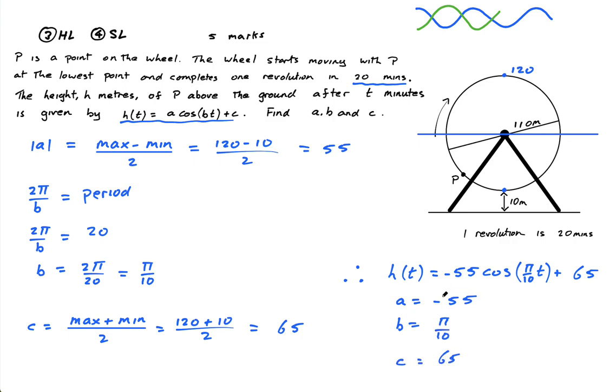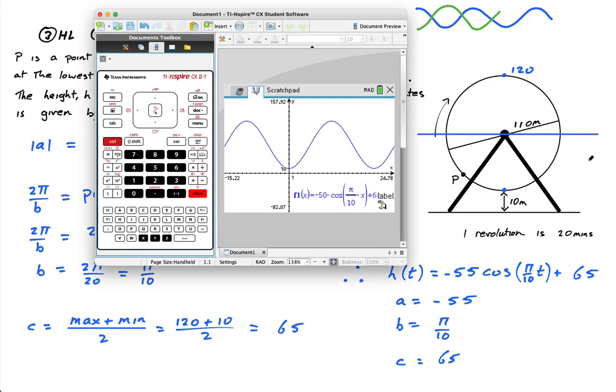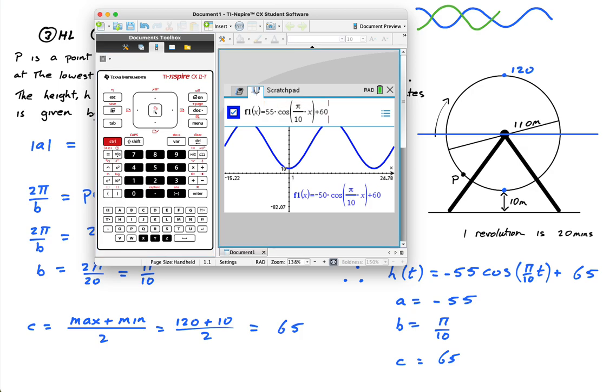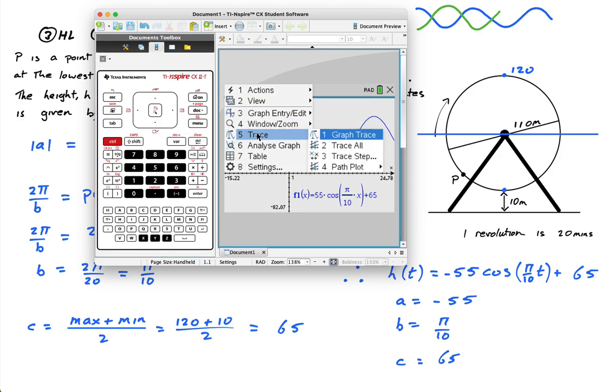This is the one that gets people. They often just write 55. Remember, you have your calculator, so you can actually graph it. So imagine you started off with 55, 55 cos of this, plus 65. And you graphed it, and you see, well, hang on. This is when time is 0. So you'd say, well, hang on. When time is 0, when we start, he's 130 meters up in the air. So that's something wrong there.